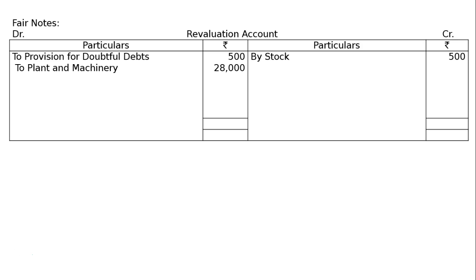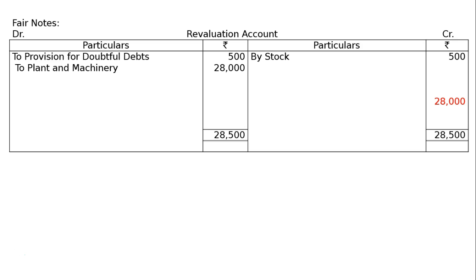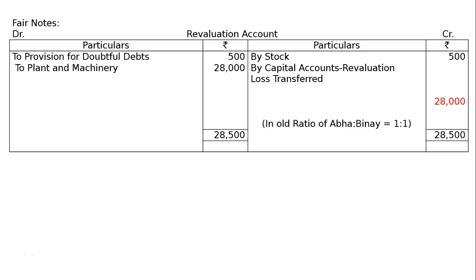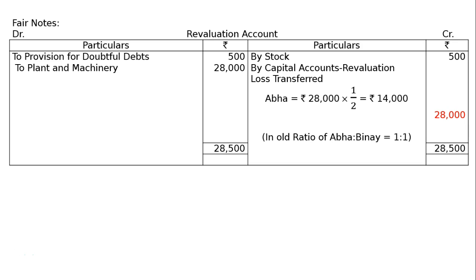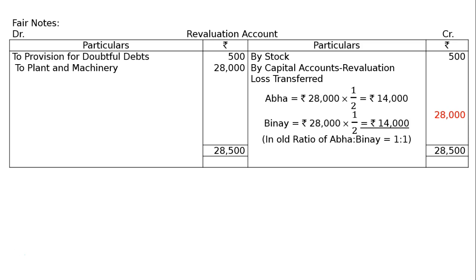Next is plant and machinery: decrease of Rs. 28,000. It was valued at Rs. 60,000 and is now valued at Rs. 32,000. Goodwill has already been treated. Totalling the debit side gives Rs. 28,500; deducting the credit of Rs. 500, the net revaluation loss is Rs. 28,000. This loss is transferred to capital accounts in the old ratio of Abha to Vinay (1:1): Abha's share is Rs. 28,000 × 1/2 = Rs. 14,000; Vinay's share is Rs. 14,000.